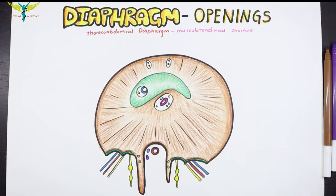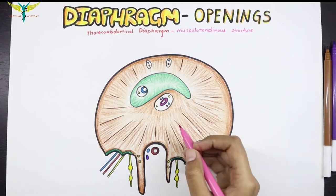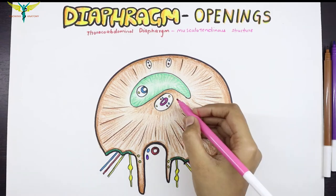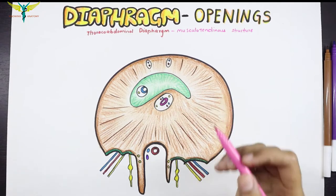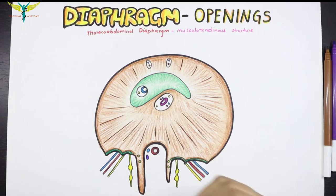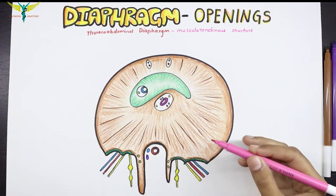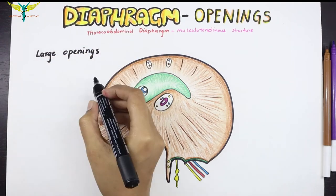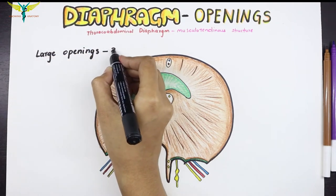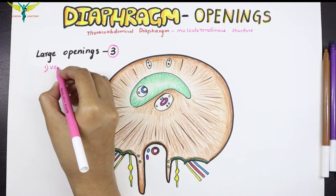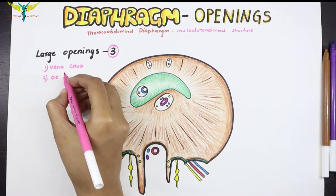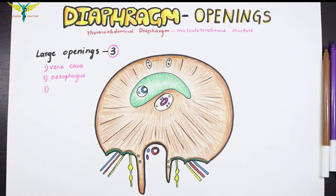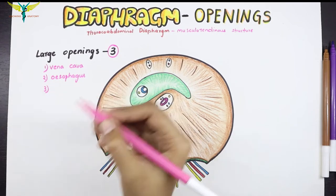There are three large openings and several small openings in the diaphragm. These openings allow structures to pass from the thorax to the abdomen and vice versa. The three large openings are: first, the vena caval opening; second, the esophageal opening; and third, the aortic opening, through which the aorta passes from the thorax to the abdomen to become the abdominal aorta.